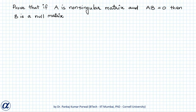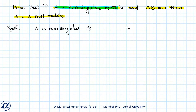In this session, we will prove that if A is a non-singular matrix and we are given that the product of matrix A and matrix B is equal to the zero matrix, then B is a null matrix. Because we are given that A is non-singular, meaning A is invertible, so A inverse exists.